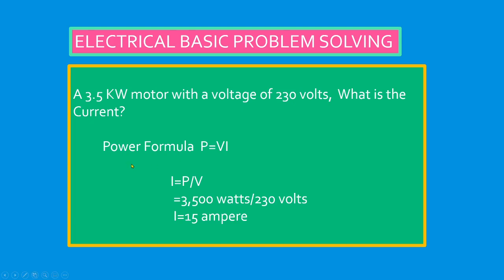Power formula. P equals voltage times current. So we are just going to transpose. I equals P over V.